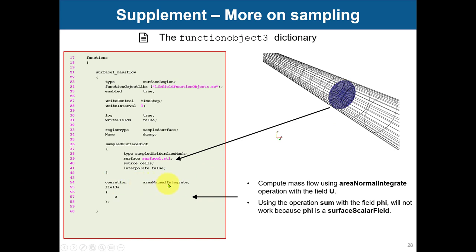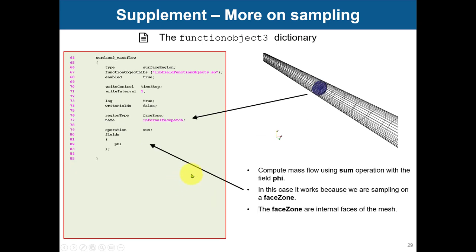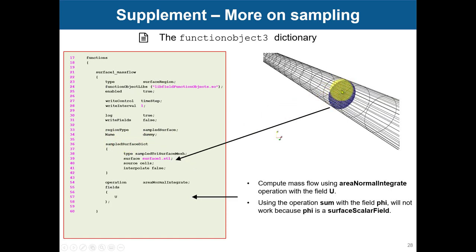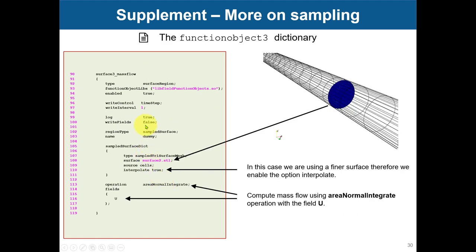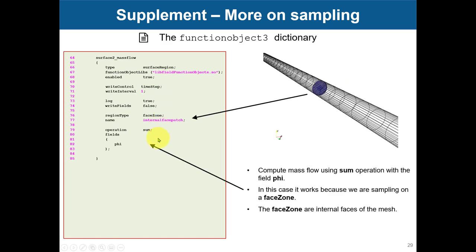This is a particular operation when you have surfaces — it's not the same as in the previous case with patches, where you use the summation of phi. When you have a face set or patch that exists in the mesh, you use the summation of phi method. But when this surface does not correspond to a face set that exists in your mesh, you need to use this other method. They are equivalent and you can do a comparison between the two operations.